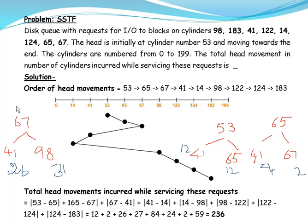Proceeding further, we calculate which is closest to 67. On the left side 41 is there, and on the right side we should not consider 65 as it has already been processed, so we consider 98. The difference between 67 and 41 is 26, and between 67 and 98 is 31. This means 41 is closest to 67, so we process 41 next. Continuing like this, the subsequent requests are 14, 98, 122, 124, and 183.